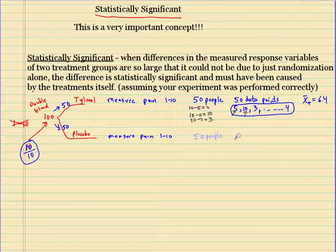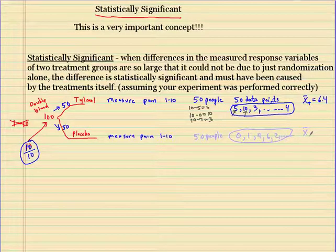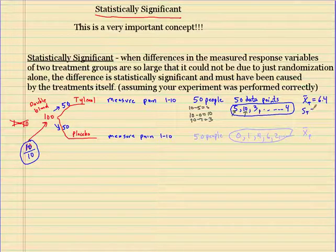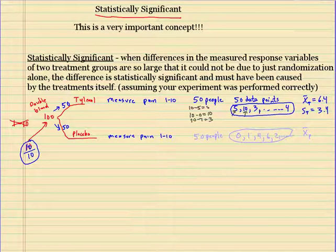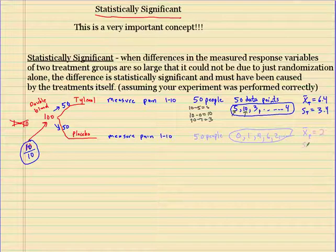A lot lower. So let's say a 0, that means they walked in with a 10, they left with a 10. 1, 4, this person went down 2. Now I have 50 numbers here, so I'm going to get the average for the placebo. Now don't forget, we're also going to have a standard deviation. We're also going to have a standard deviation. So let's say the standard deviation is 3.4.